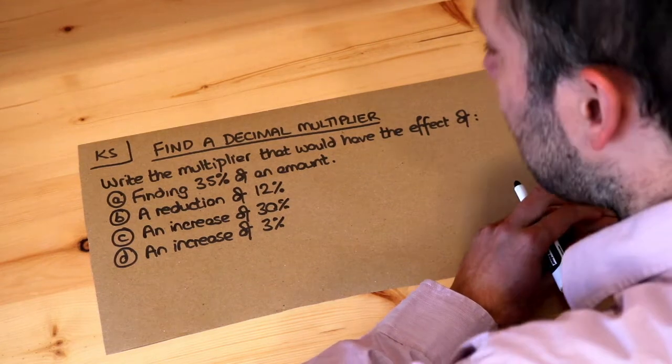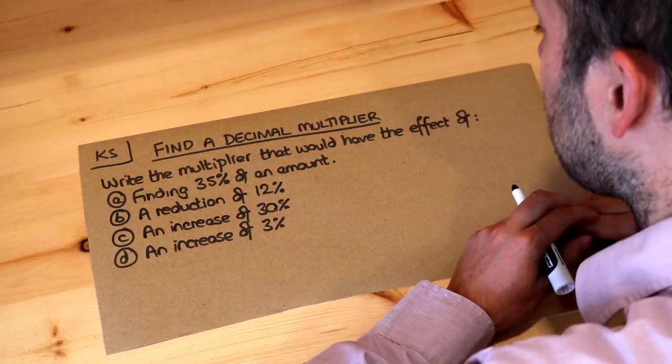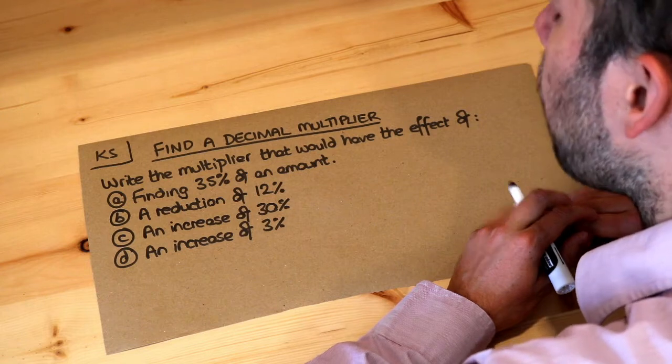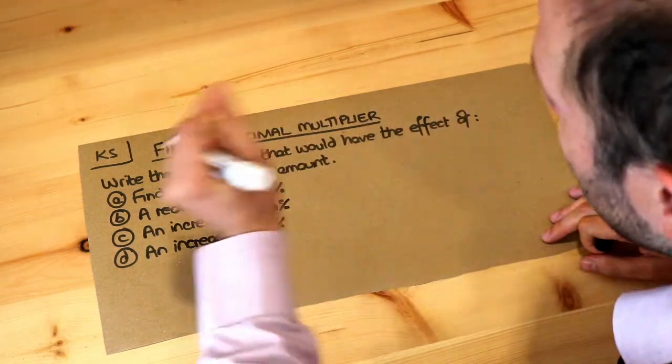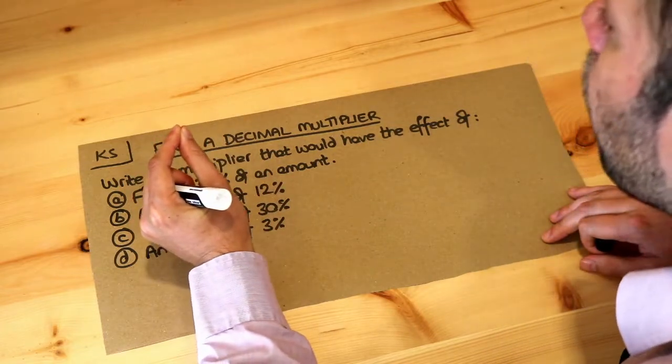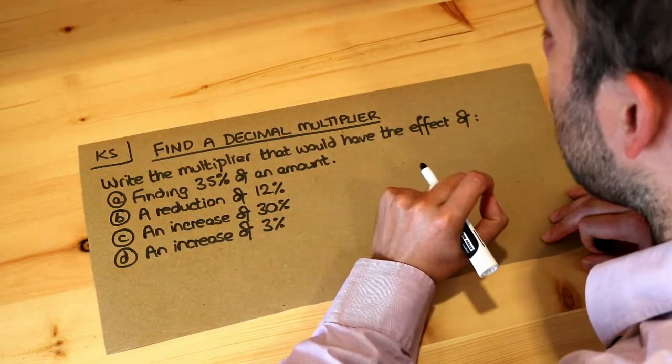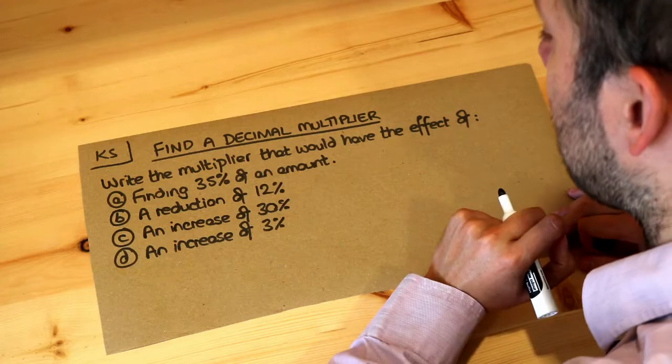Hello and welcome to this Dr Ross Maths key skill video on finding a decimal multiplier. A decimal multiplier is a way to represent either finding a percentage of an amount or applying a percentage change by multiplying by a particular value.